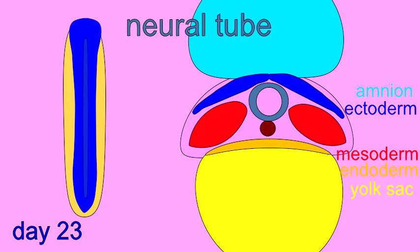The brain possesses spaces known as ventricles, and the spinal cord possesses spaces known as the central canal. And so, a hollow neural tube is established.